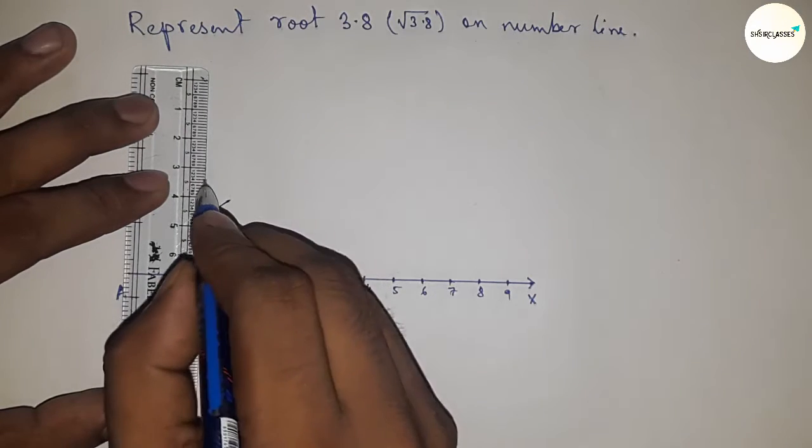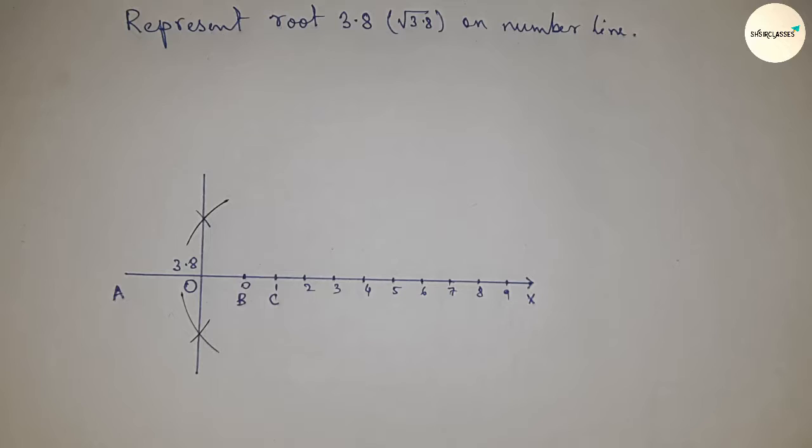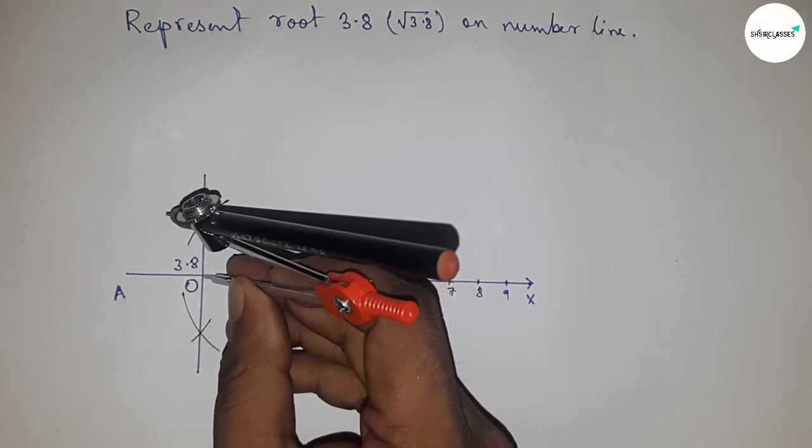Join these points which meet at point O. Now take the distance OA and OC to draw a semicircle through points A and C.